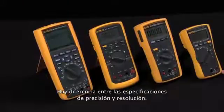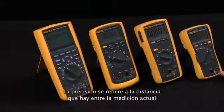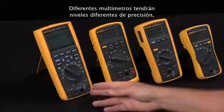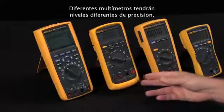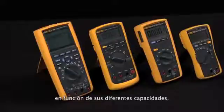There's a difference between the specifications of accuracy and resolution. Accuracy relates to how closely the measurement you're taking is to the true value of that measurement. Different multimeters will have different levels of accuracy depending on the capabilities within that multimeter.